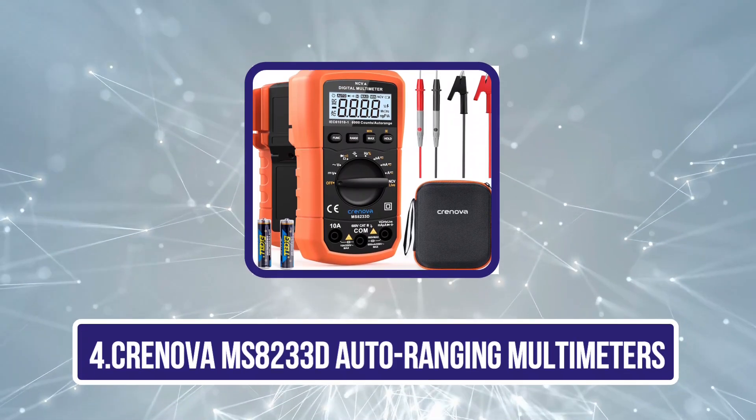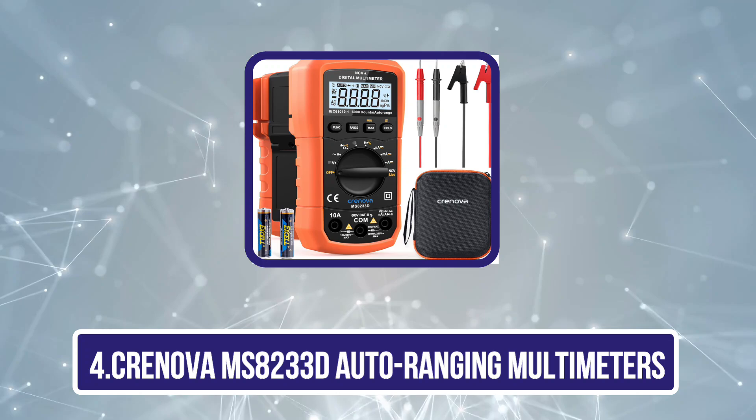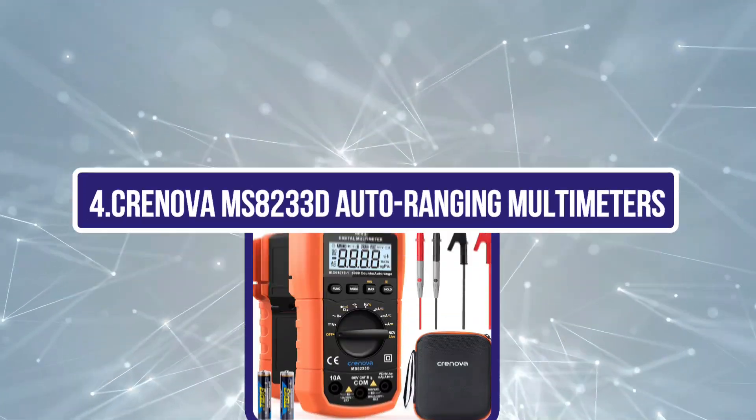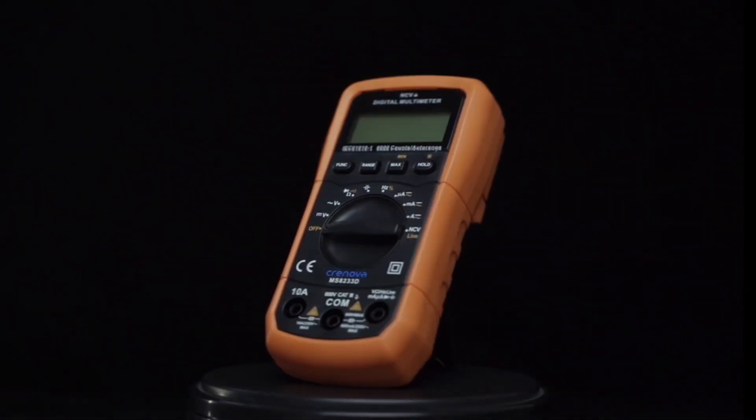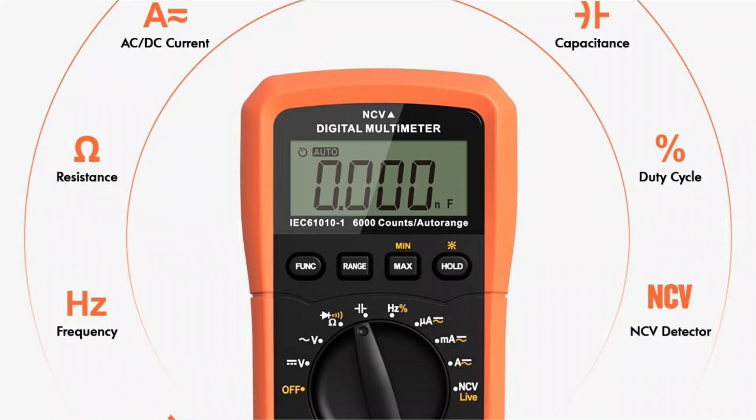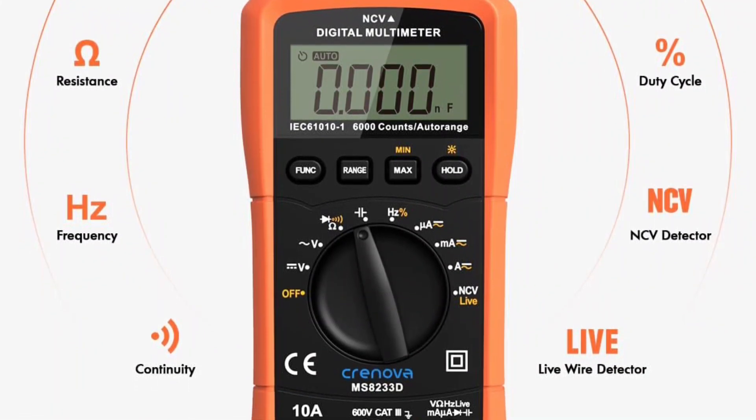Now number 4, Cronova MS-8230 3D Auto Ranging Multimeter. The Cronova MS-8230 3D Auto Ranging Multimeter is a versatile tool from a brand known for delivering budget-friendly yet reliable electronic testing devices. Cronova focuses on providing user-friendly products that cater to both professionals and DIY enthusiasts.